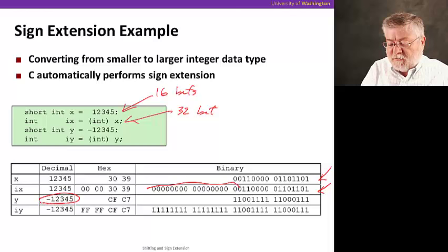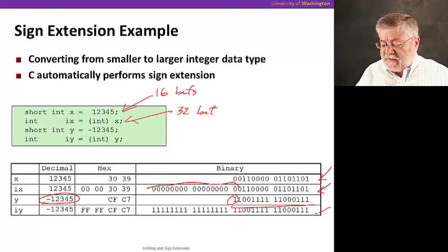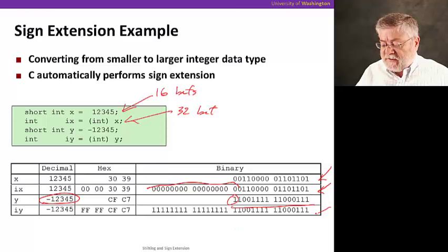For a negative value, if we use negative 12345, it's represented by this bit pattern. You can tell it's a negative number because the high order bit is a 1. And when we sign extend it into the larger representation of 32 bits, we copy that 1 throughout those upper 16 bits. And so sign extension is used both when we're doing arithmetic shifts to the right as well as when we're casting a value into a larger bit pattern.